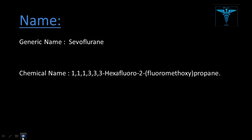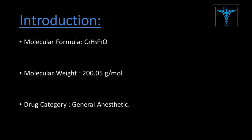Sevoflurane is basically an inhalation anesthetic. As you see on the screen, the name of this drug is Sevoflurane, also known by its generic name. The chemical name is 1-1-1-3-3-3-hexafluoro-2-fluoromethoxypropane. The molecular formula is C4H3F7O, and the molecular weight is 200.5 gram per mole. The drug category is general anesthetic, which causes a condition in which the body falls into a sleep-like state.